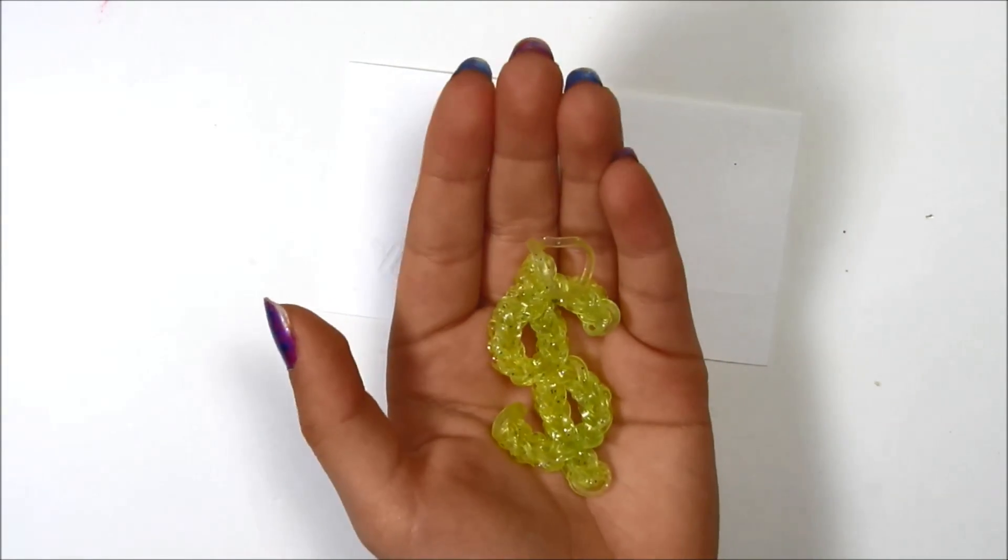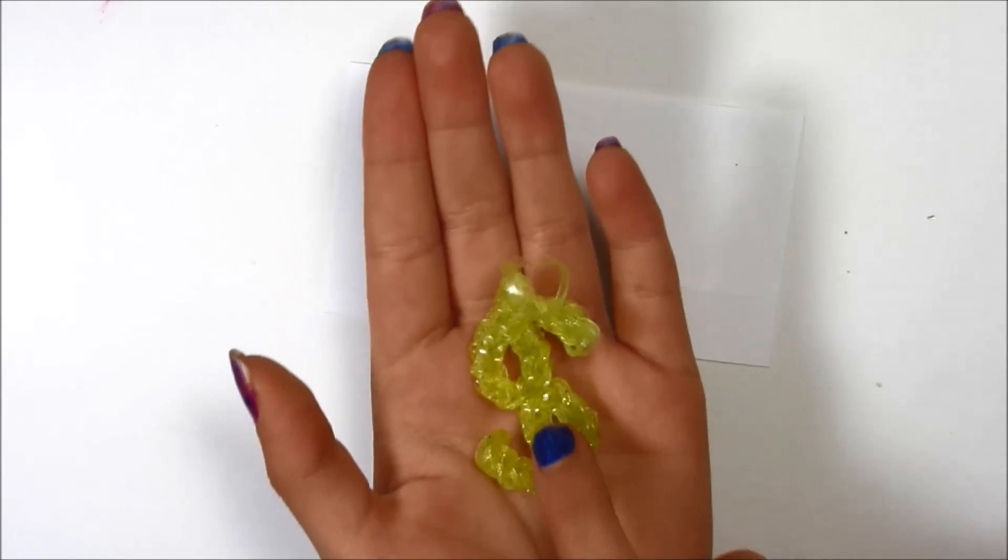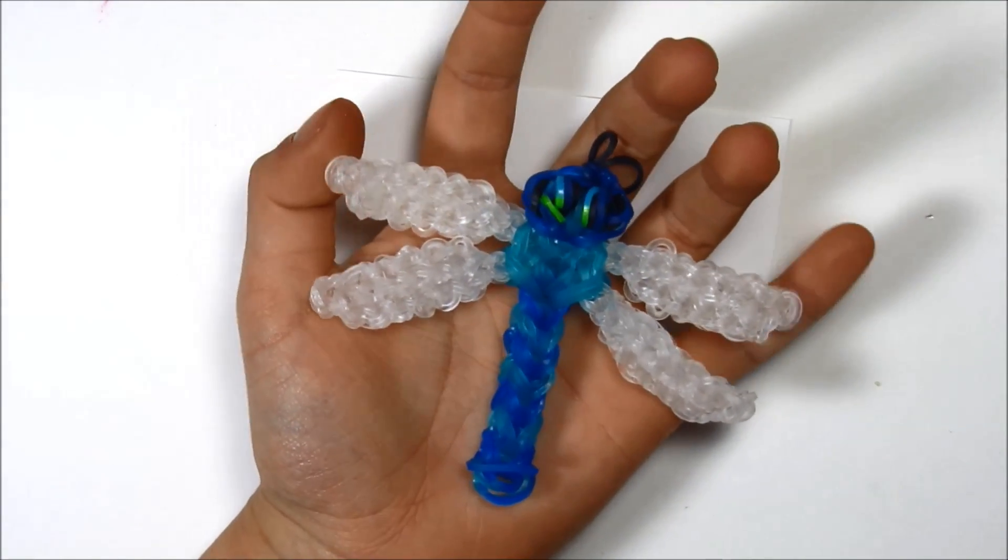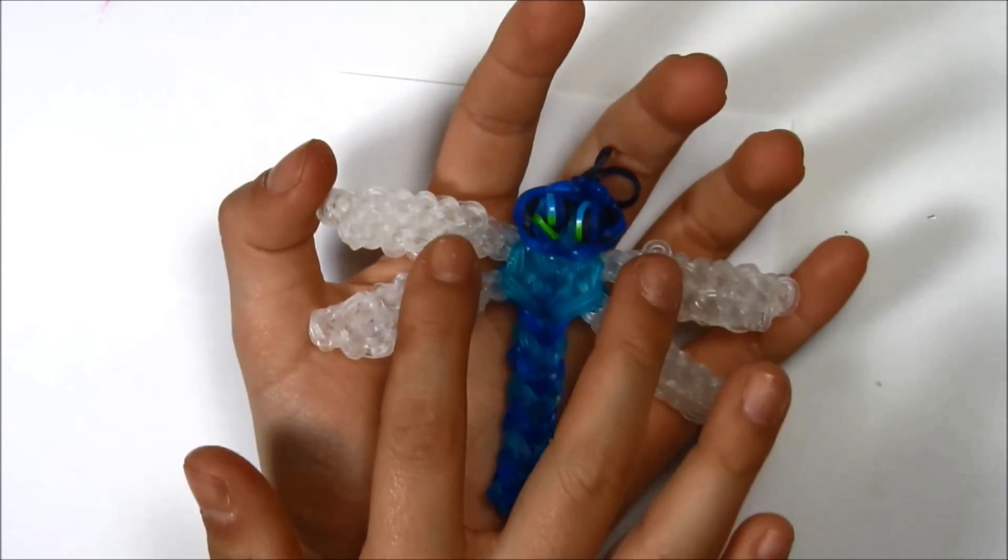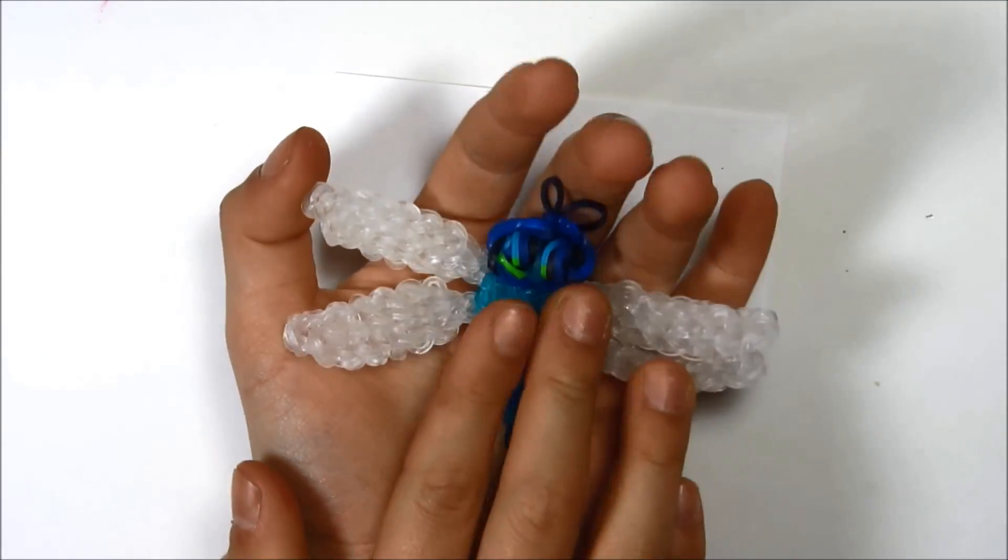This is her money charm. It has a nice line down the middle, and money's awesome. This is her dragonfly charm. I like it because it has these really cool four wings that are clear and these big eyes.